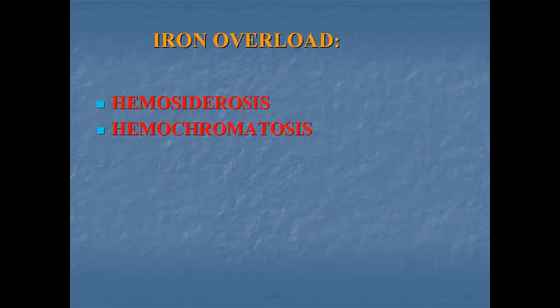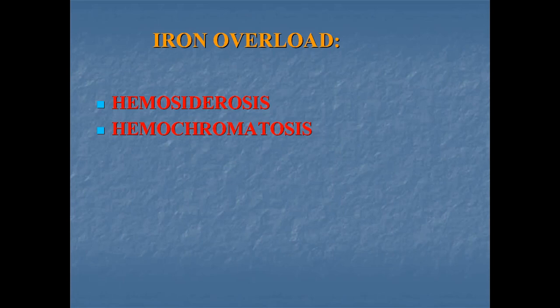Now iron overload. Hemosiderosis, hemochromatosis, and iron poisoning are conditions associated with iron overload. Hemosiderosis is a clinical condition used to describe increased iron storage as hemosiderin without any associated tissue injury. No tissue injury is seen in hemosiderosis — it is actually an initial stage of iron overload.